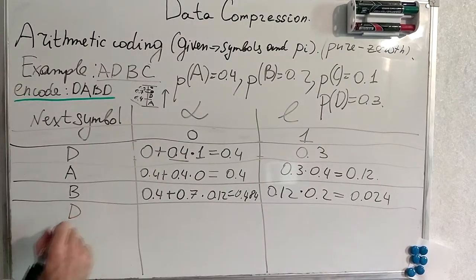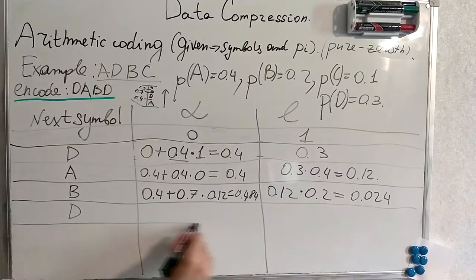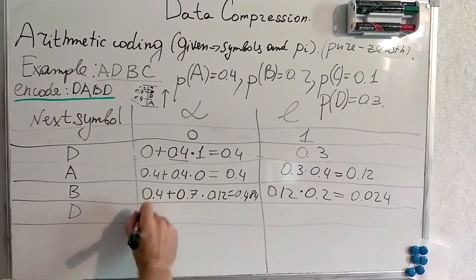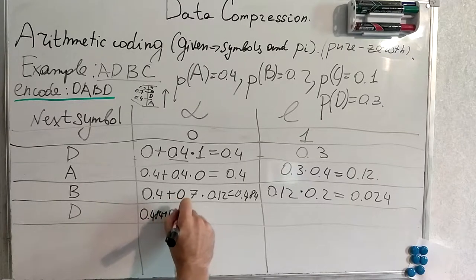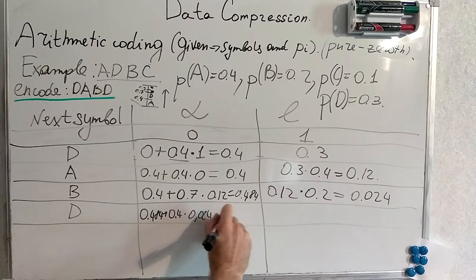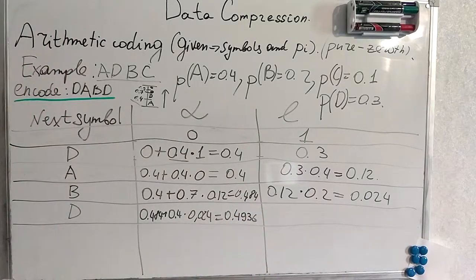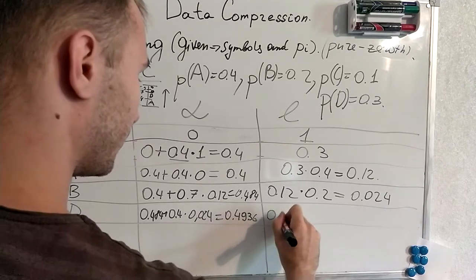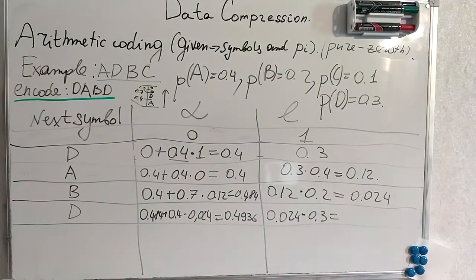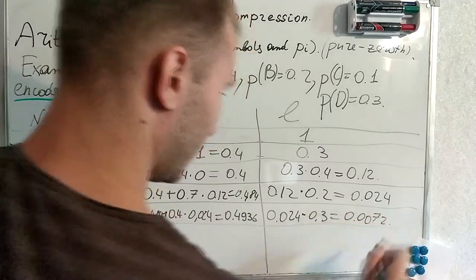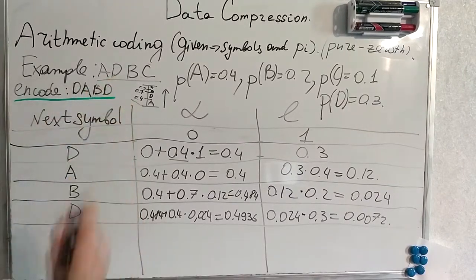And the final symbol D. We have to once again redefine alpha. Redefine L. We use previous alpha 0.484 plus 0.4. And the numbers are starting to look scary. But to our luck we are done. We are done with that. 0.00072.